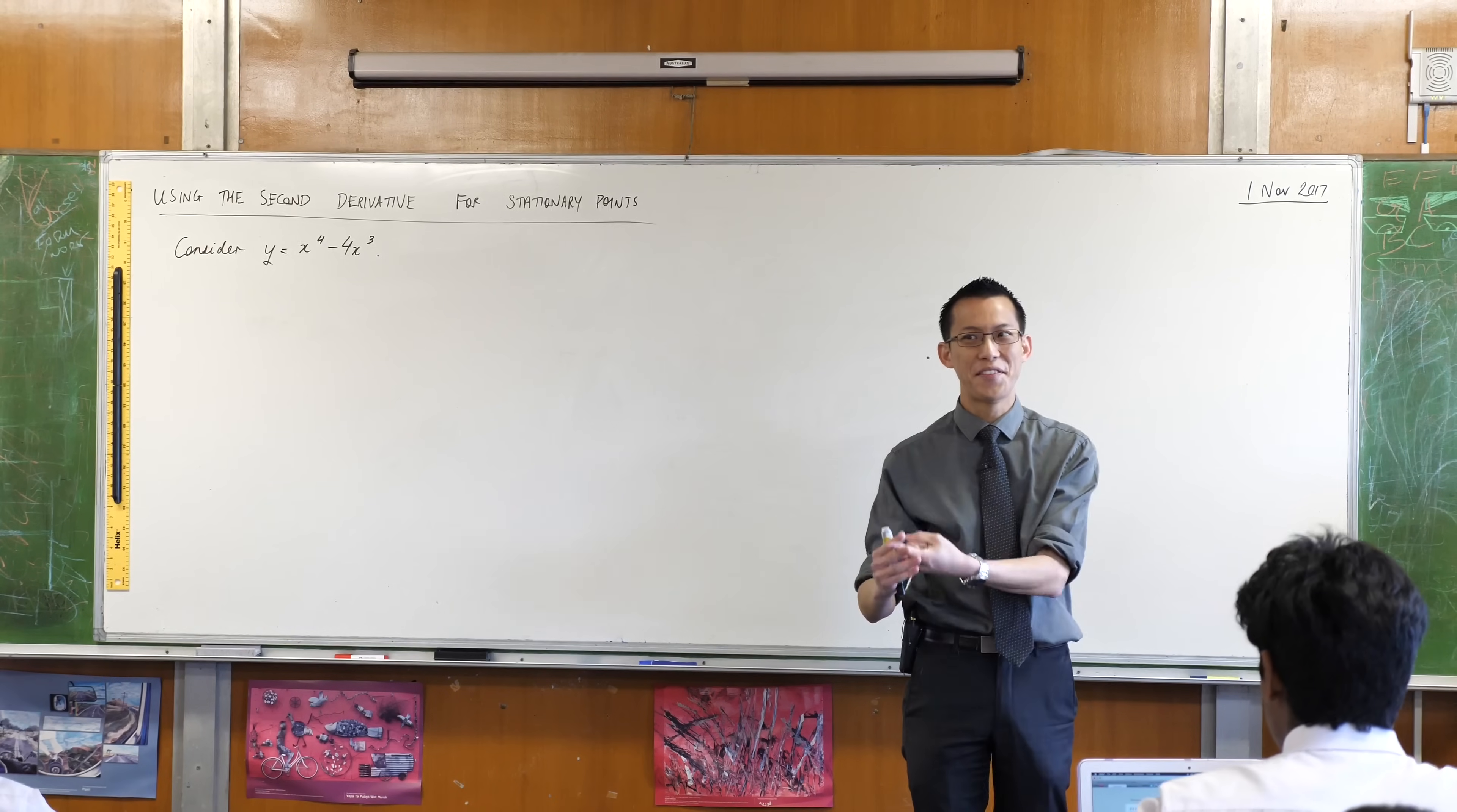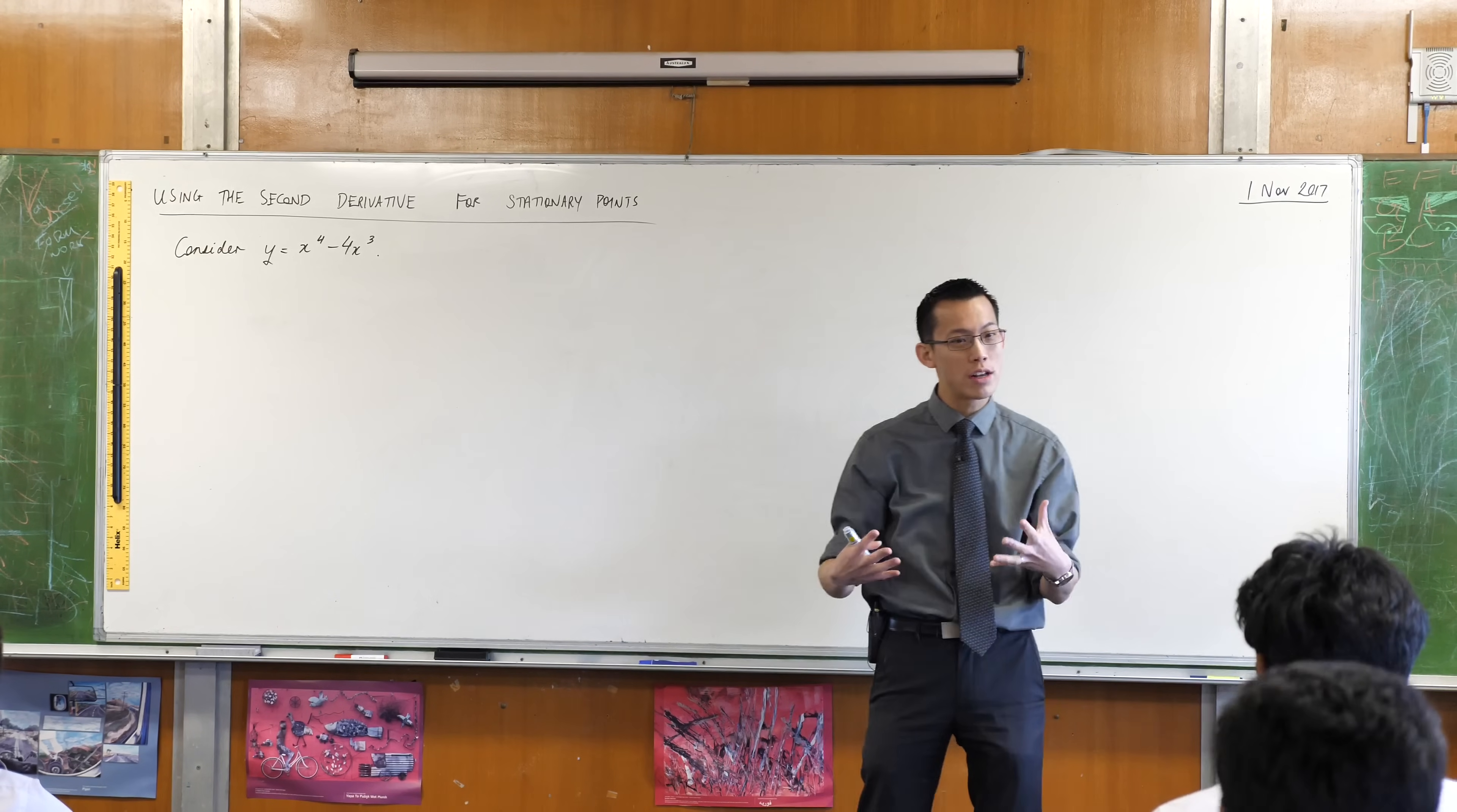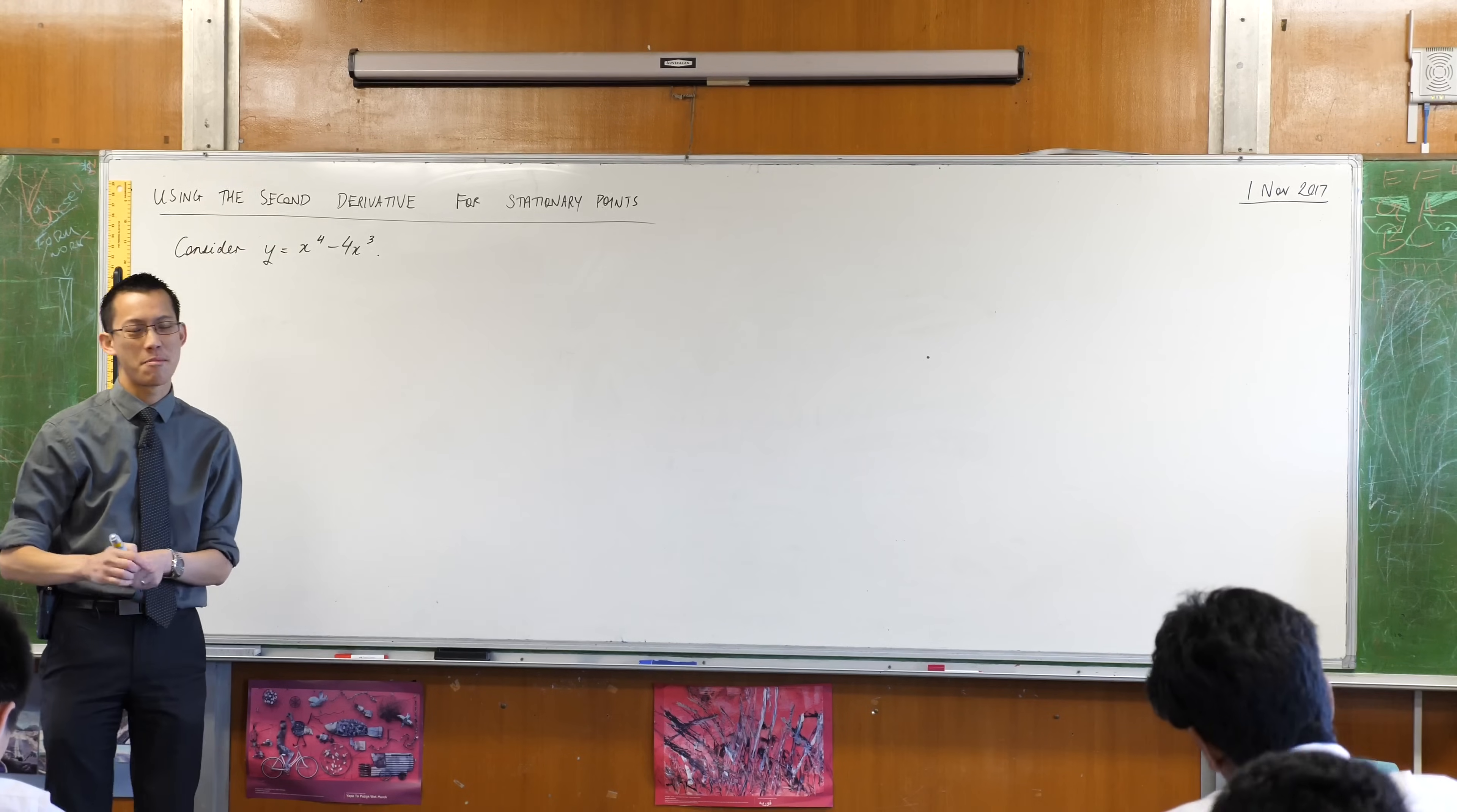We started with the first derivative. That tells you, of course, the gradient function, right? So that means increasing, decreasing, or of course stationary. And you can use that first derivative all on its own, in fact it's the safest guaranteed way, to work out what kind of a stationary point do you have. We know there are, broadly speaking, three kinds of stationary points.